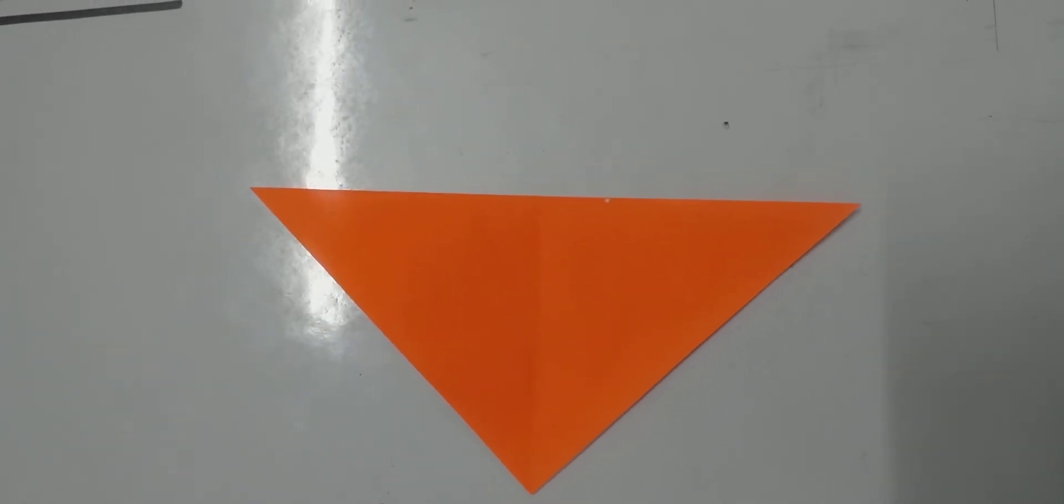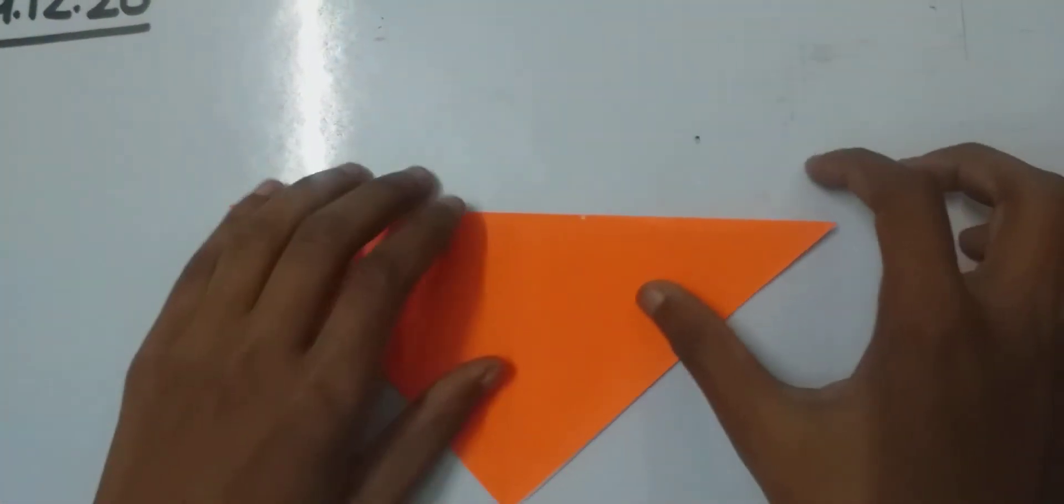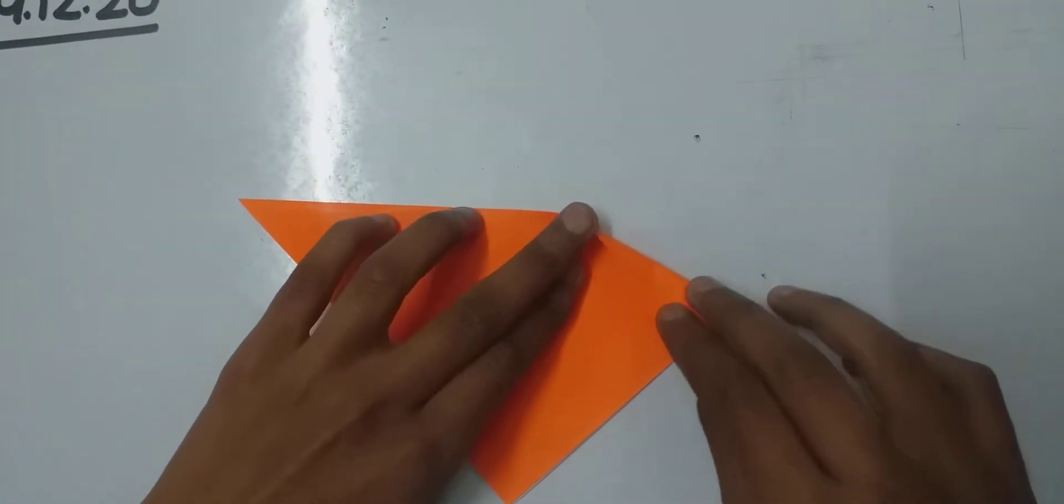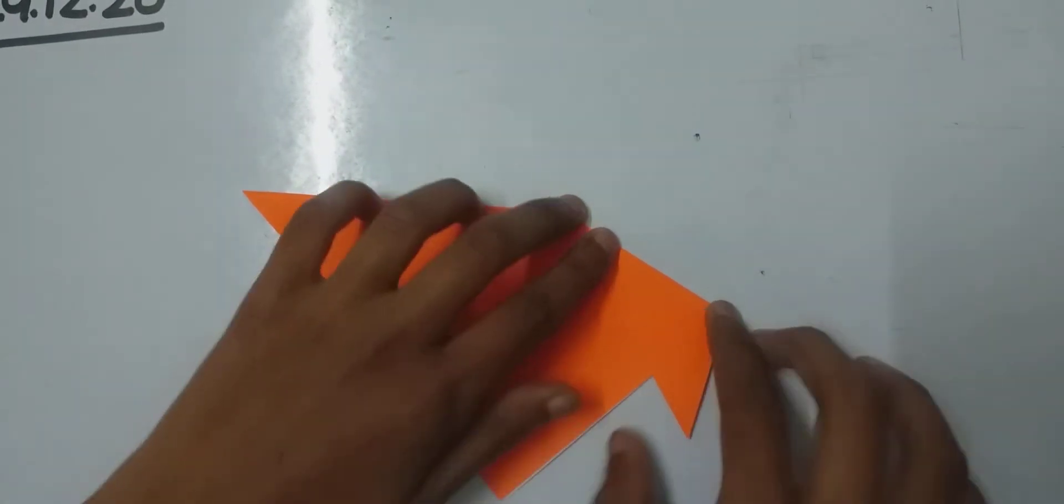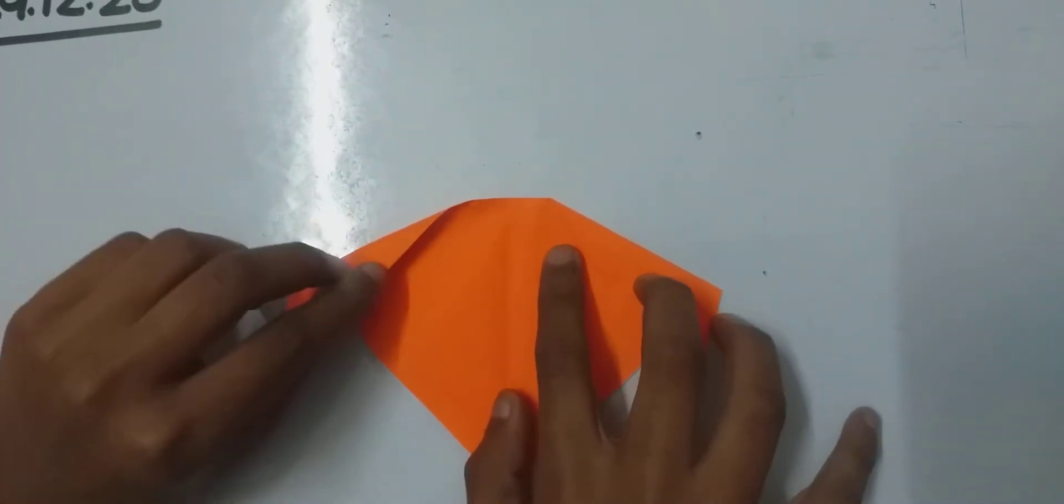Now let's make the ears. Fold both corners of the triangle down.